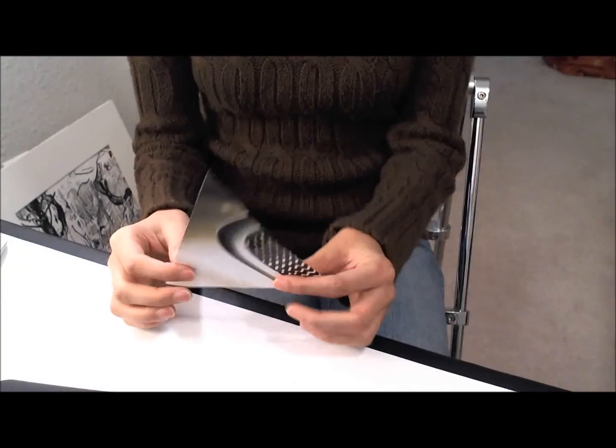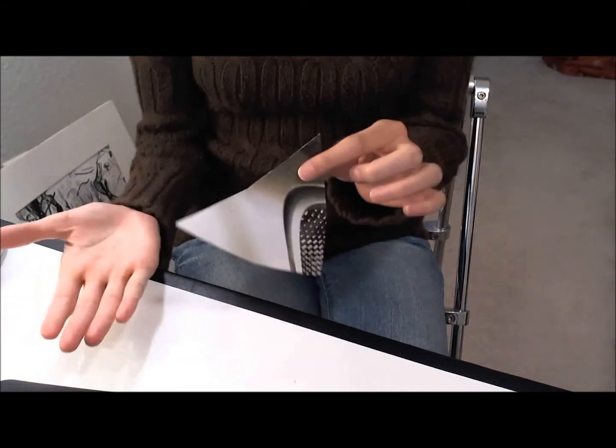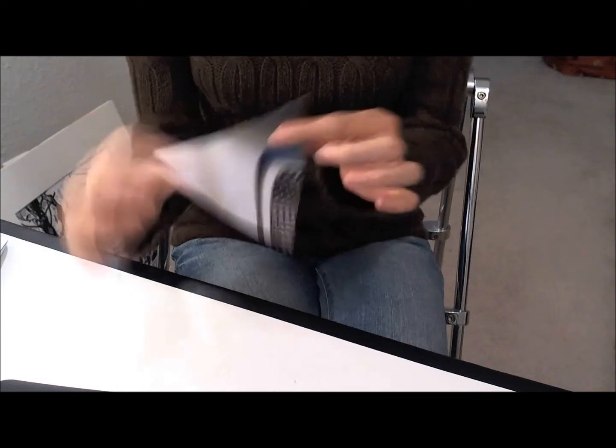To make this six-pointed star, you begin with a triangle. As I said before, you want to make sure it's equilateral, that means equal lengths on all three sides.